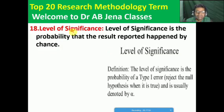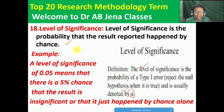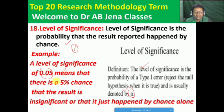Next, the level of significance. The level of significance is the probability that the result reported happened by chance. It is the probability of a Type 1 error — rejecting the null hypothesis when it is true — and is usually denoted by alpha. For example, a level of significance of 0.05 means there is a 5% chance that the result is insignificant and the rest 95% result is significant.